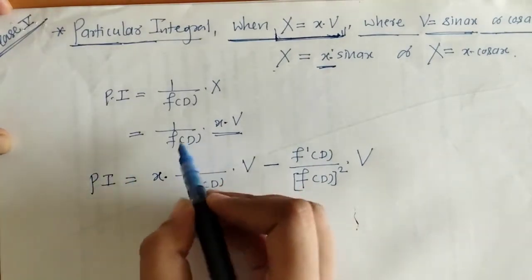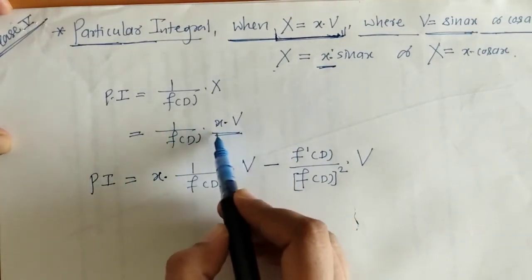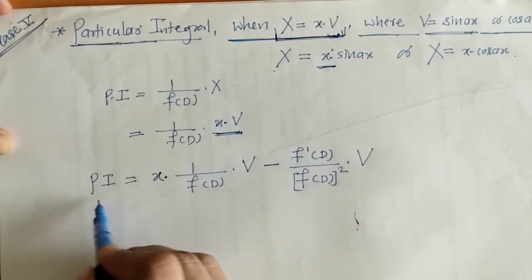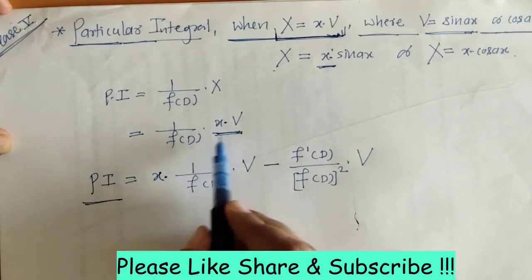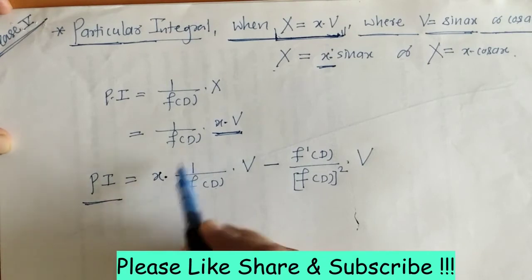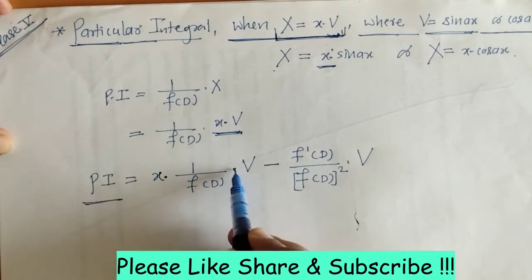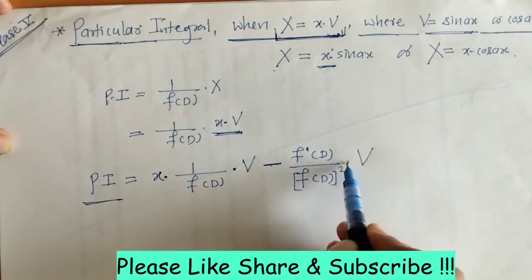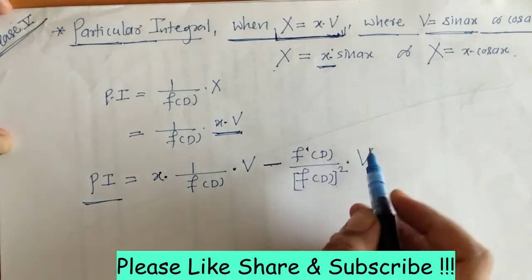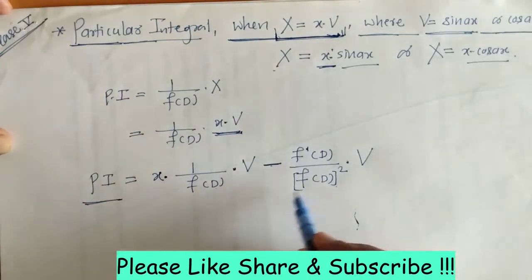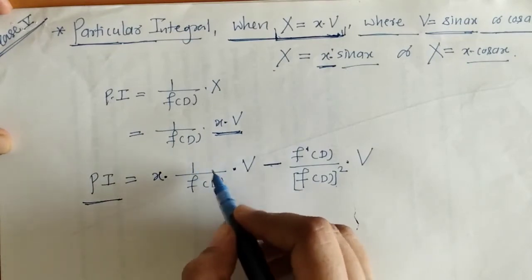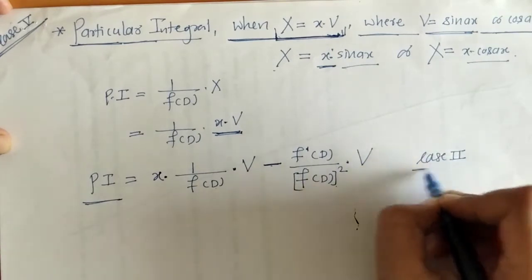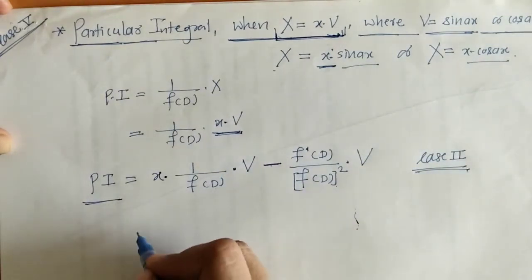In this way we find PI when X equals x·v. We take x outside the operation, then we have 1/f(D)·v minus f'(D)/f(D)² · v, where v is sin(ax) or cos(ax). We operate 1/f(D) on v using case 2, and by simplifying this we get the required PI.